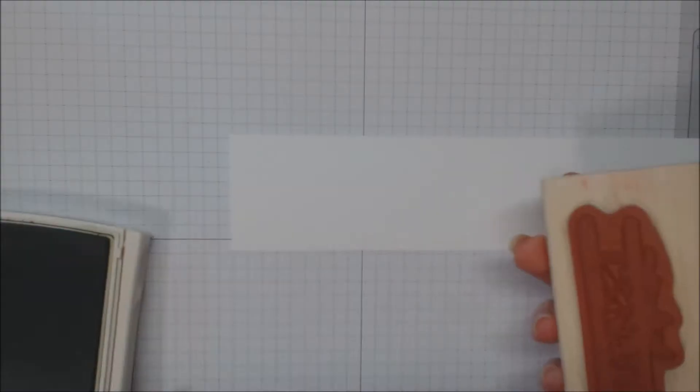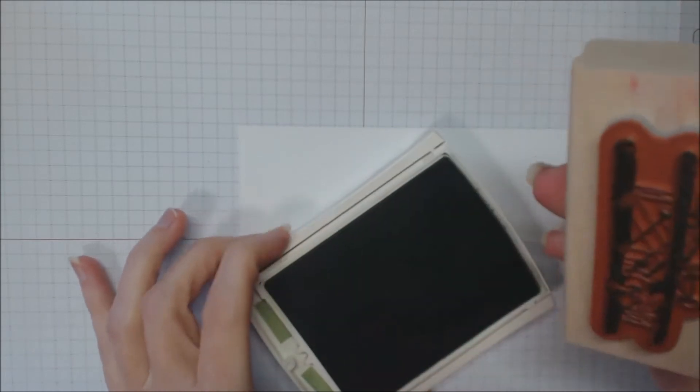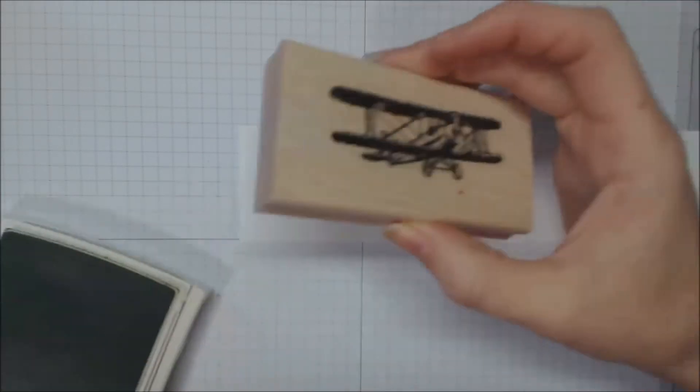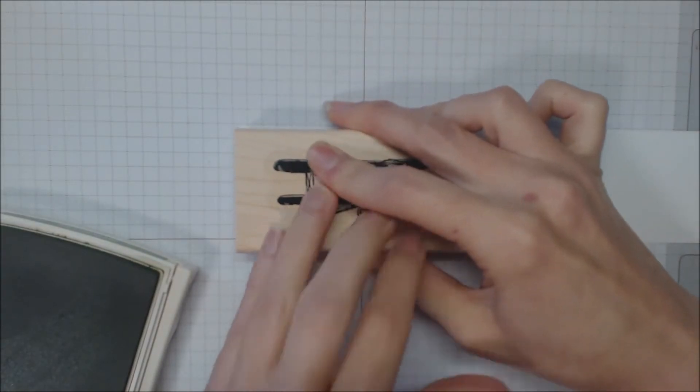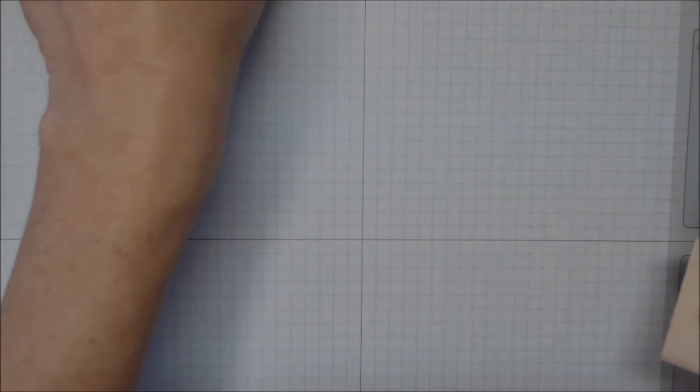Then I have a piece of scrap paper. I'm going to take the airplane stamp, ink that up with the Wild Wasabi and stamp that. I'm going to cut this out and pop it up onto my card in a little bit so we'll set that aside as well.